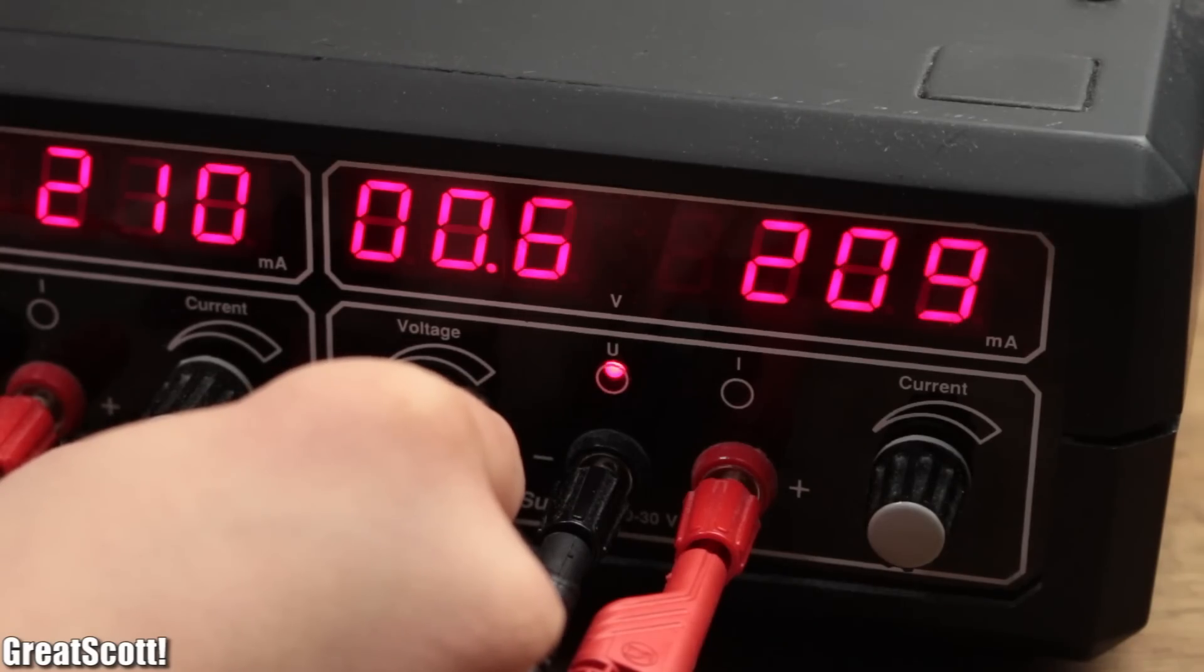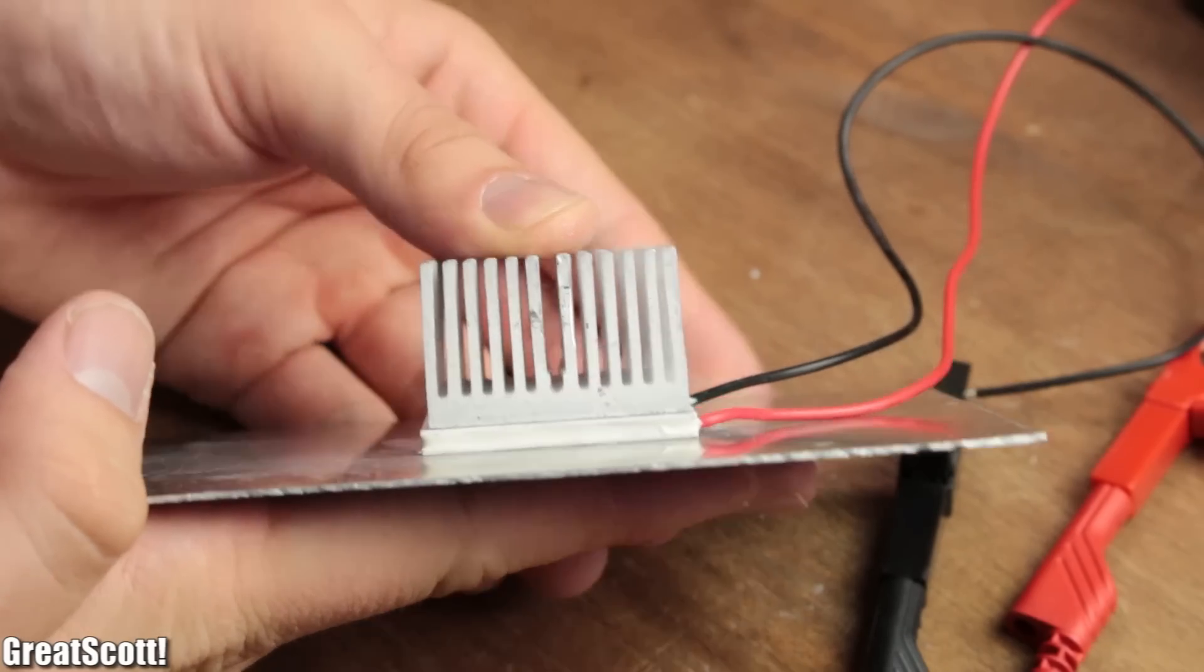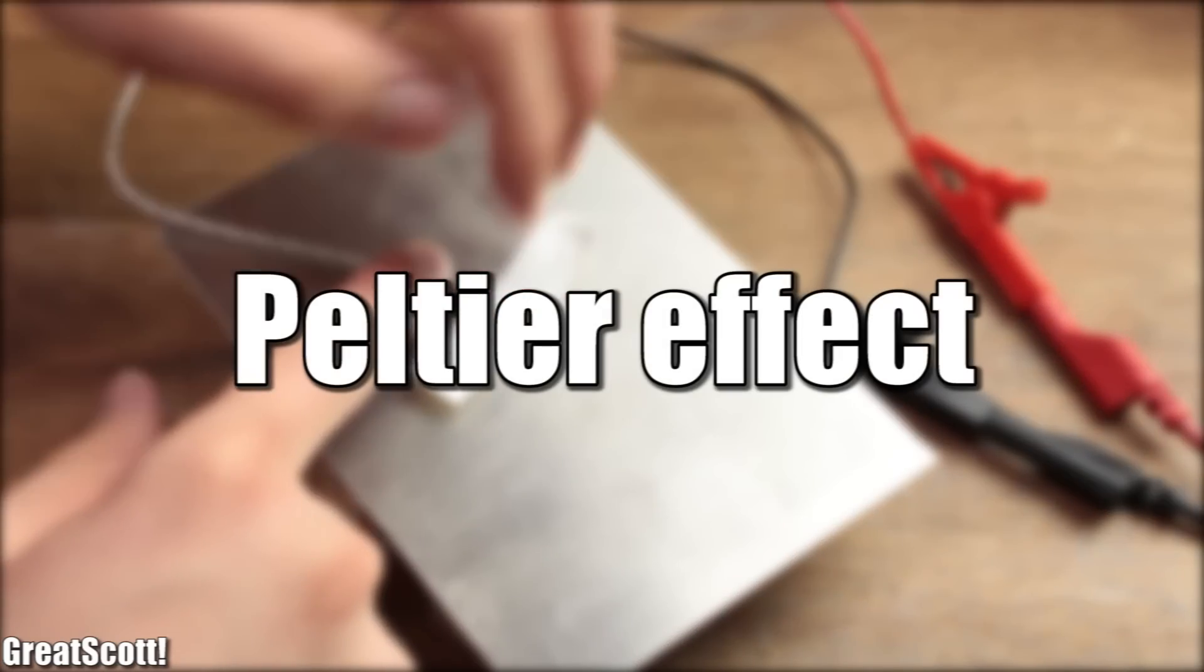we can see that current is flowing and the aluminum side gets cold and the heatsink side gets hotter. This is the so-called Peltier effect.